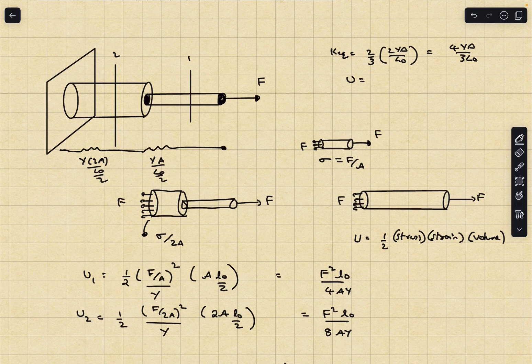Now I can write down the stored spring potential energy as F square by 2K. This will be F square divided by 2 times K equivalent, and I'll obtain the same answer of 3 by 8 F square L0 by AY.